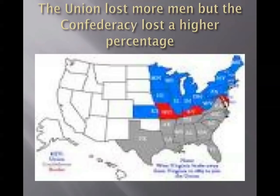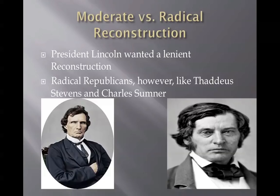There were two views of Reconstruction. One was a moderate view held by Lincoln and his vice president Andrew Johnson — Lincoln wanted a lenient reconstruction, meaning he wanted to make it easy for the Confederacy to come back into the Union. His reasoning was that one of the big reasons they fought the war was to preserve the Union, so why make it difficult for the Confederacy to return?